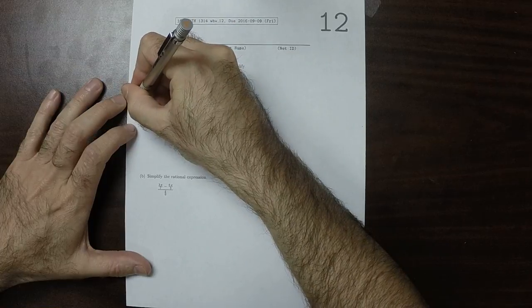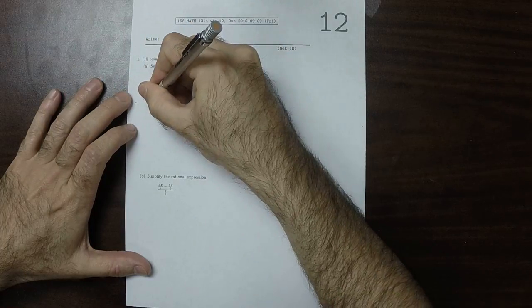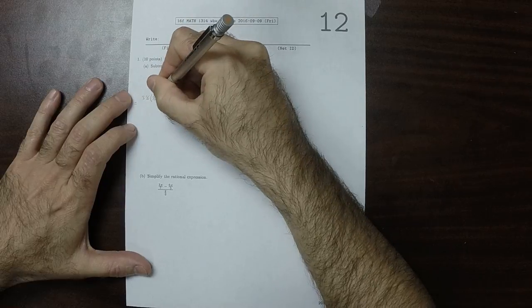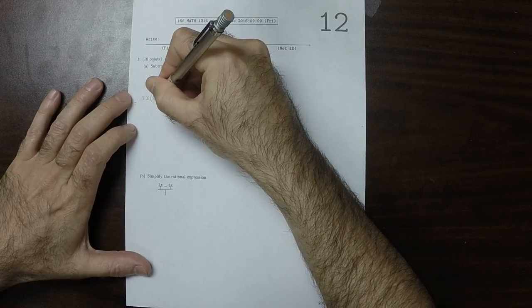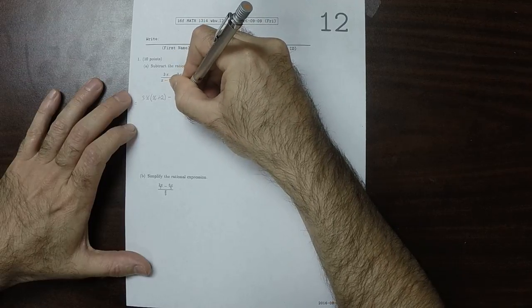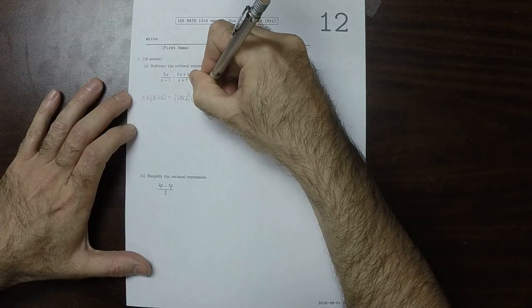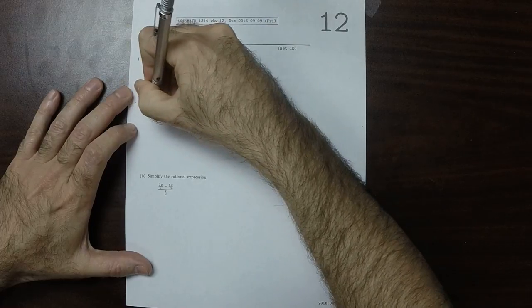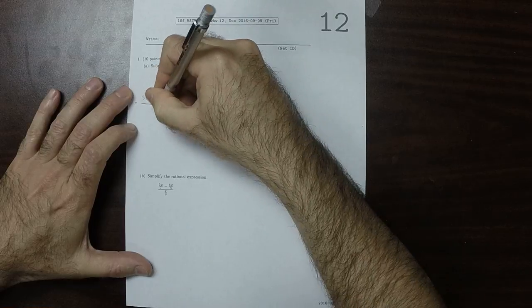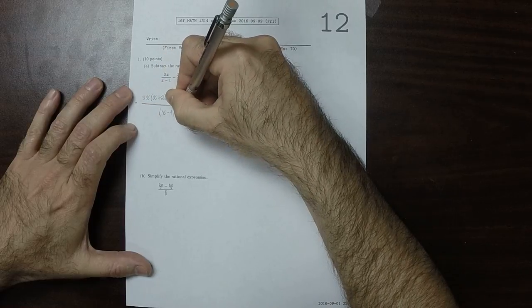The first step is to say that this is 3x multiplied by that denominator, x plus 2, and then minus 3x plus 2 multiplied by that denominator, x minus 1, over the product of the denominators.